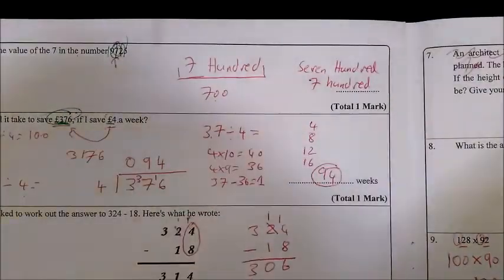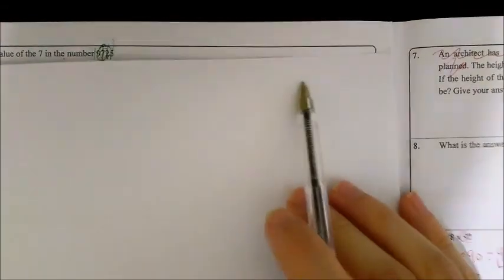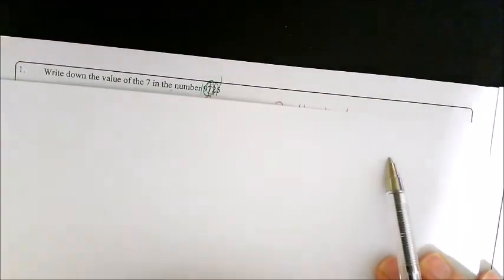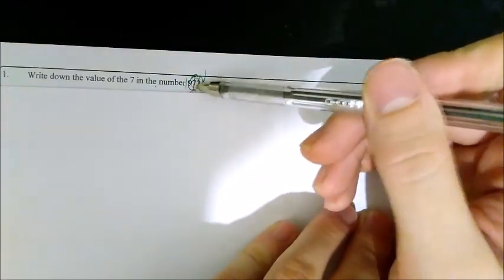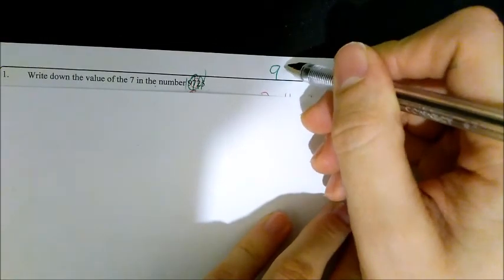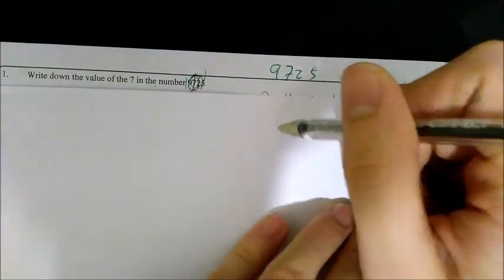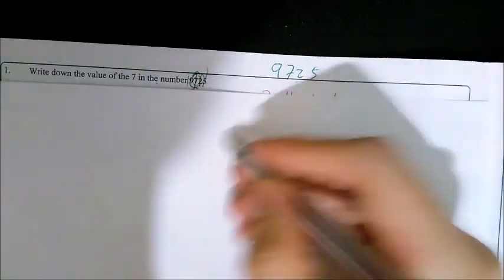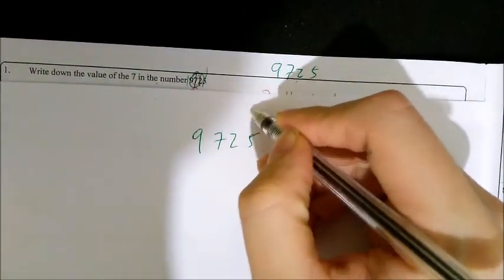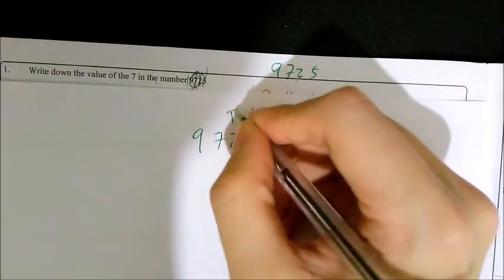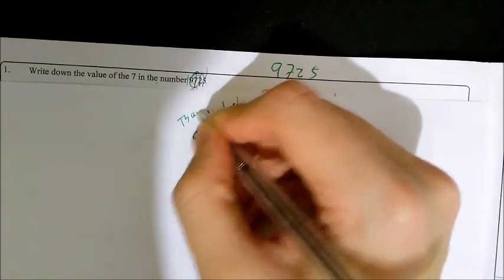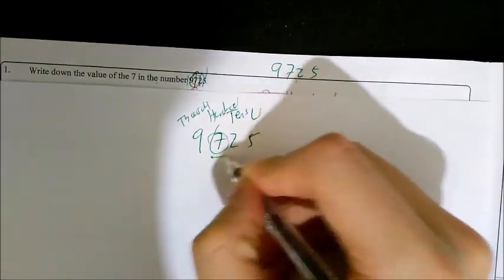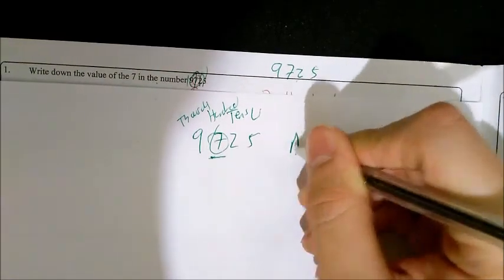For the first question, as you can see, I'm going to do it on paper because I've already worked out the answers underneath. Question one: write down the value of seven in the number 9725. I'll write it down again, 9725. So what I do here is I'd literally just write this out. If I wasn't certain, I'd write down my columns: units, tens, hundreds, thousand. Where's my seven? It's in the hundreds.